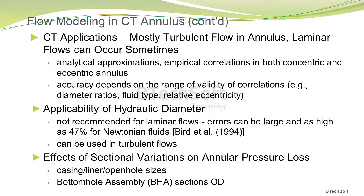In coil tubing applications, flows are mostly turbulent in the annulus, although laminar flows can occur sometimes. There are several analytical expressions, approximations, and empirical correlations that have been developed for flows in both concentric and eccentric annuli. The accuracy of these analytical approximations and correlations depends on the range of validity for which they have been developed — for example, the correlations may be applicable for a certain fluid type, range of diameter ratios, and relative eccentricity.